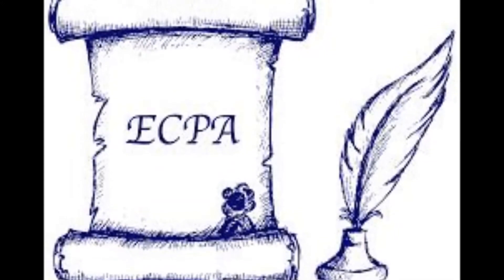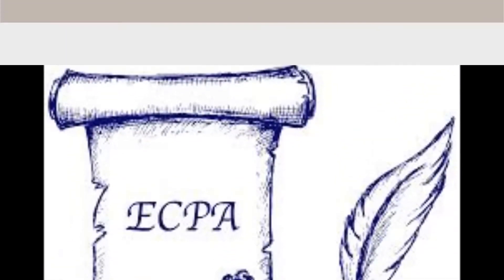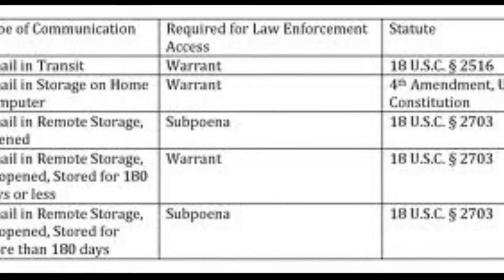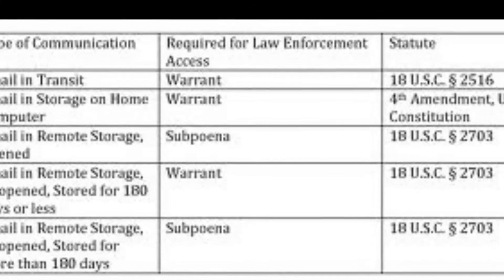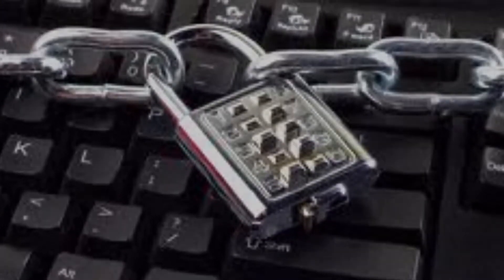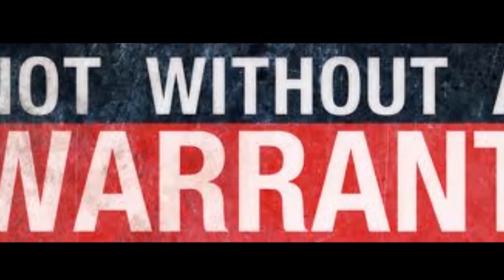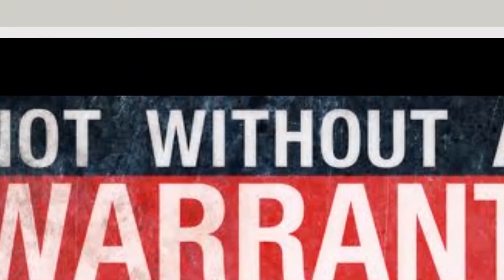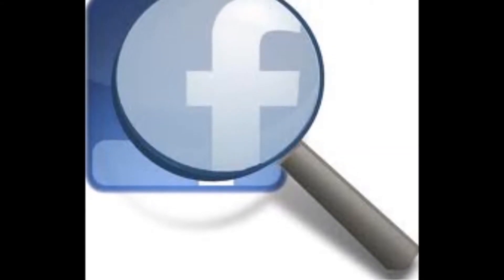The Electronic Communications Privacy Act was passed in 1986 and allowed police to conduct roving wiretaps that moved from phone to phone in order to show if a suspect was attempting to avoid surveillance. The Stored Communications Act, which is part of the Electronic Communications Privacy Act, allows the government to search and obtain information from an Internet service provider's email messages more than 180 days old without a warrant. The Act justifies this by explaining that a user is giving up privacy after the Internet provider has stored the information.